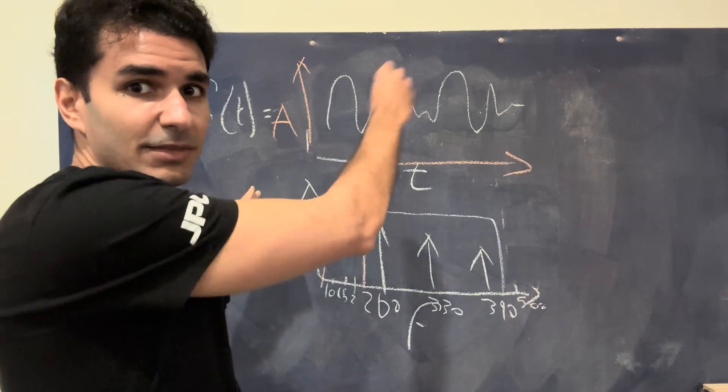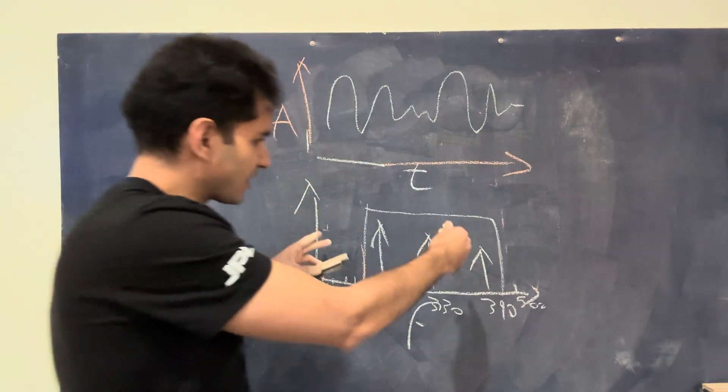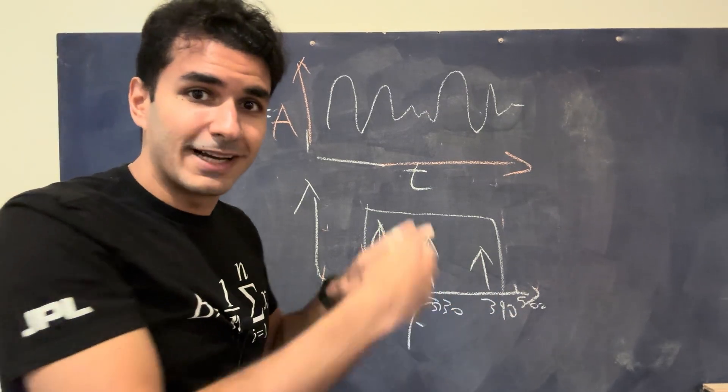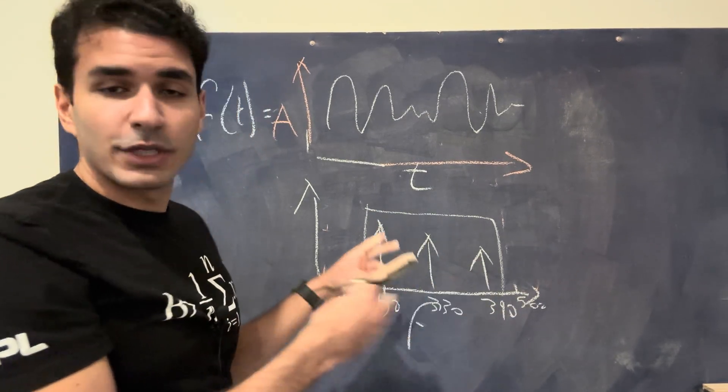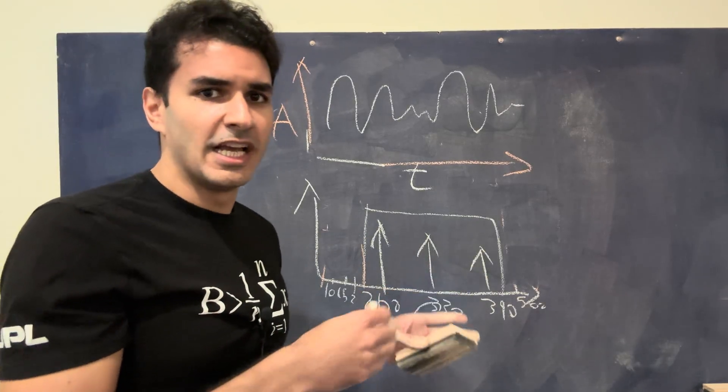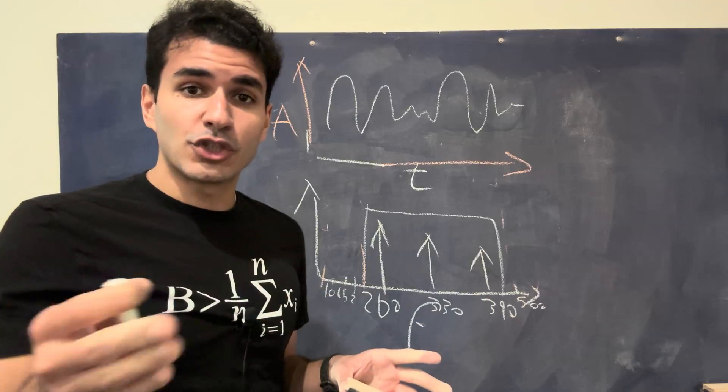So all the Fourier transform really is doing is it takes any signal, any signal in time that's oscillating in time, takes a snapshot of it, and it's able to identify the frequency components of that signal. Once we identify those frequency components, then we can go ahead and do all types of magic tricks, all types of signal processing, all types of filtering, all types of amplifying things, adding things.